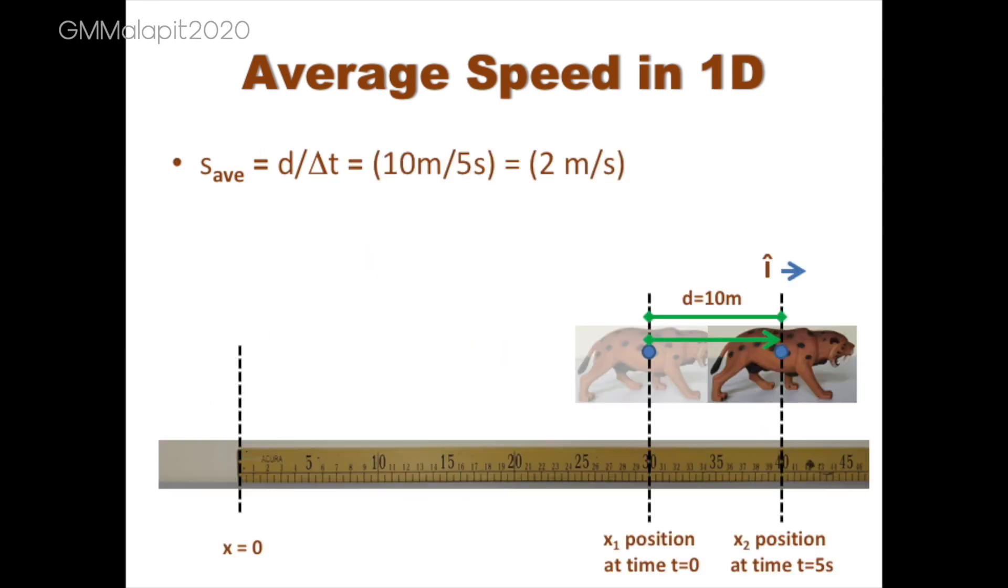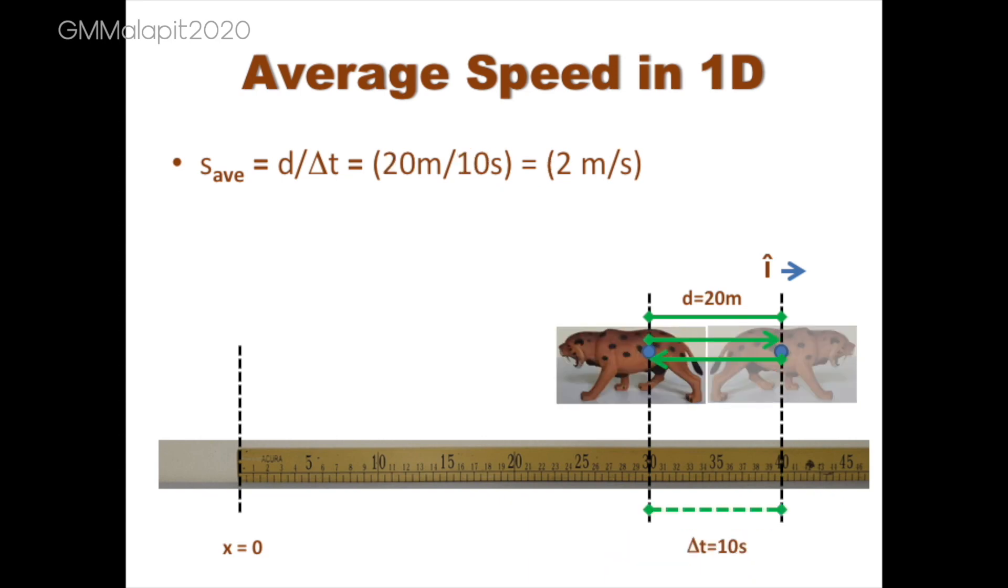Here is the computation of average speed from our previous example. Now, if this smilodon went back to its starting point after a total of 10 seconds, covering a distance of 20 meters, its average velocity becomes zero while its average speed is 2 meters per second.